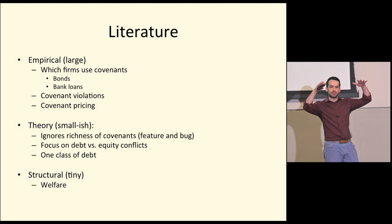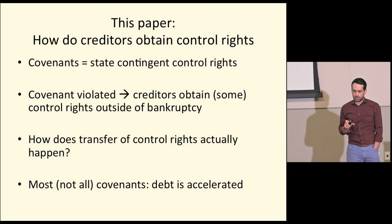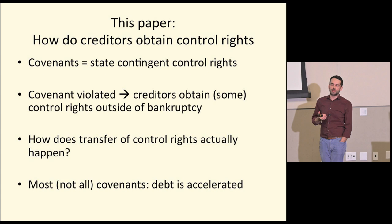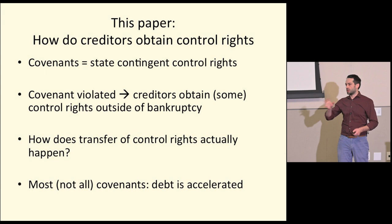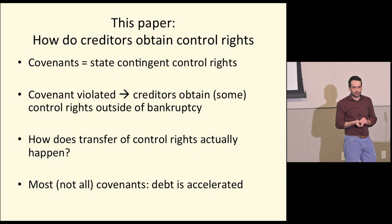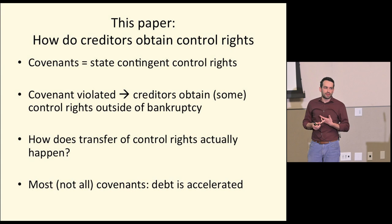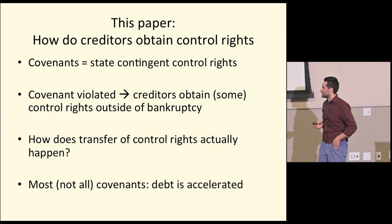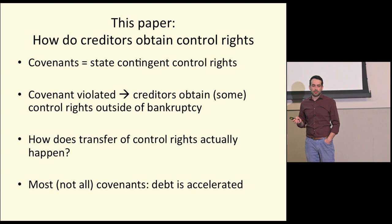Where this paper comes in for me is it asks: how do creditors obtain these contingent control rights? In principle, covenants give creditors the ability to make decisions in the firm when a certain state of the world happens. But in practice, how do they grab their control rights over investment, debt issuance, and so on — conditional on covenants being violated but the firm not yet being in bankruptcy? In bankruptcy we know how they get control rights.